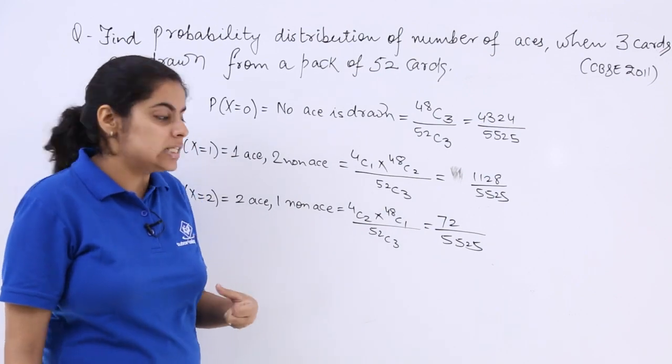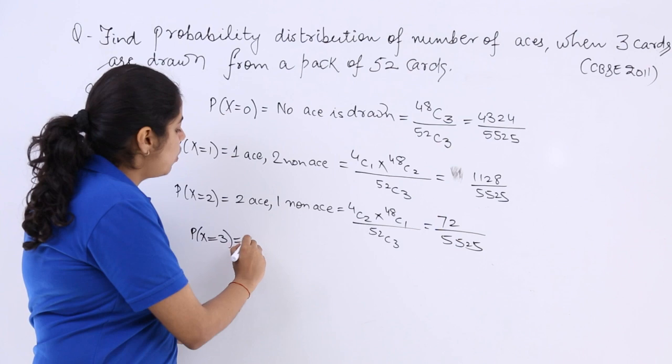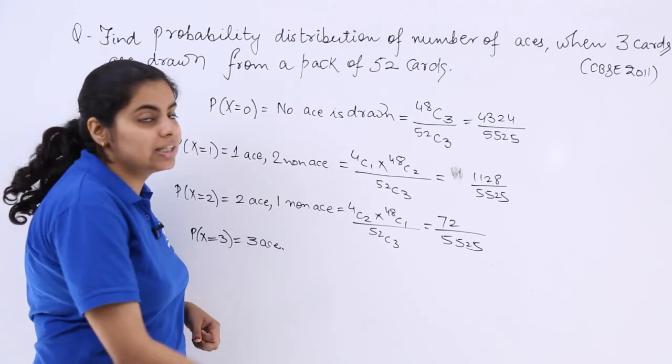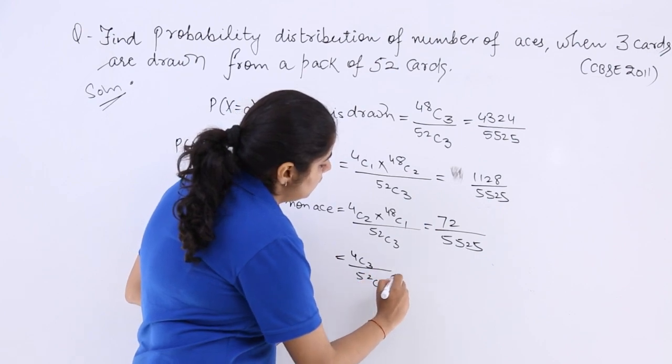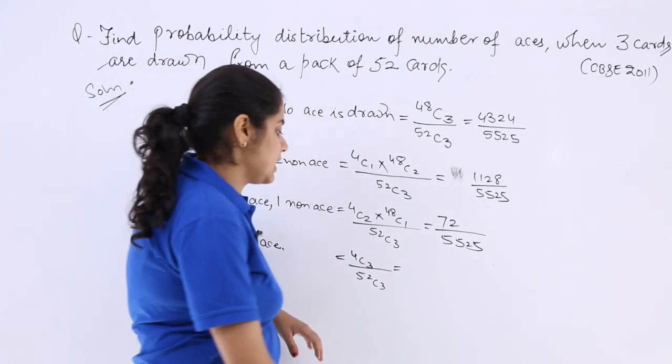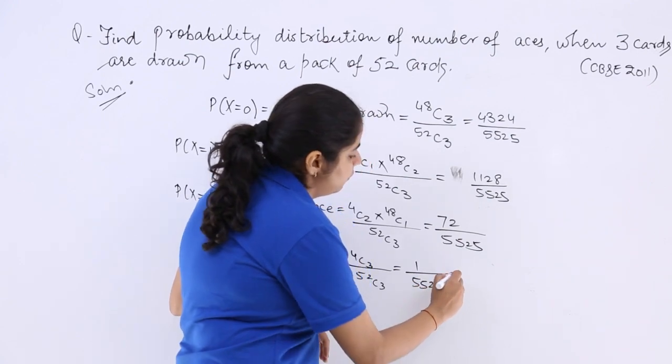Now last but not the least, I say that P(X=3). That means I have all the 3 from ace category only. So what will be the answer for this? 4c3 over 52c3. Now 4c3 is actually equal to 1 and 52c3 is 5525.